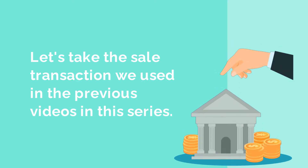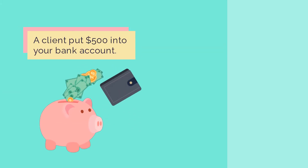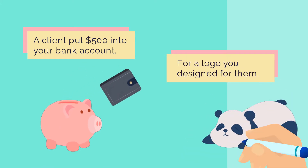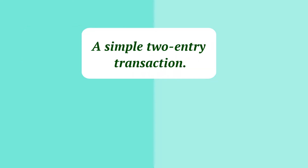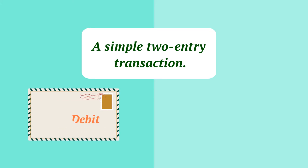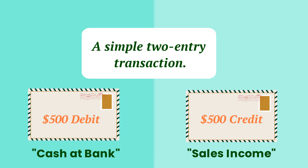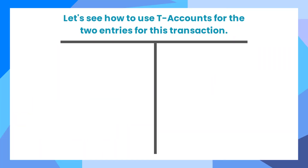Let's take the sale transaction we used in the previous videos in this series. In that transaction, a client paid you by transferring $500 into your business bank account after you designed a logo for them. As we learned in the previous videos, this is a simple, two-entry transaction. All we need to do is post a $500 debit into the Cash at Bank asset account and a $500 credit into the Sales Income Revenue account. Let's see how to use T-accounts to map out the two entries for this transaction.